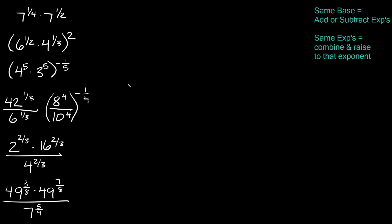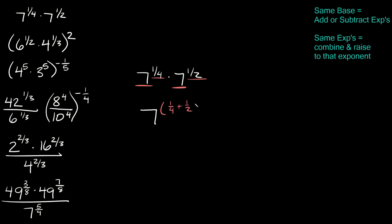So for example this first problem: 7 to the one-fourth times 7 to the one-half. These numbers are our bases. So if you have a problem that has the same bases, then you're going to either add or subtract the exponents — that's literally all you have to do. Here we have the same bases, so this is going to equal 7, and since we're multiplying we just add the exponents: one-fourth plus one-half. We can rewrite one-half as two-fourths, so one-fourth plus two-fourths equals three-fourths. Our answer is 7 raised to the three-fourths.